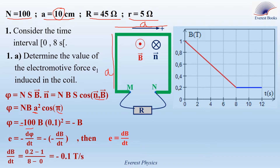So E equals dB/dt, and dB/dt is the slope of the B–t graph between 0 and 8 seconds. The slope is (B₂ − B₁)/(t₂ − t₁). Taking points (8 s, 0.2 T) and (0 s, 1 T), dB/dt equals (0.2 − 1)/(8 − 0) = −0.1 T/s. Therefore, the induced electromotive force during the first 8 seconds is equal to −0.1 V.